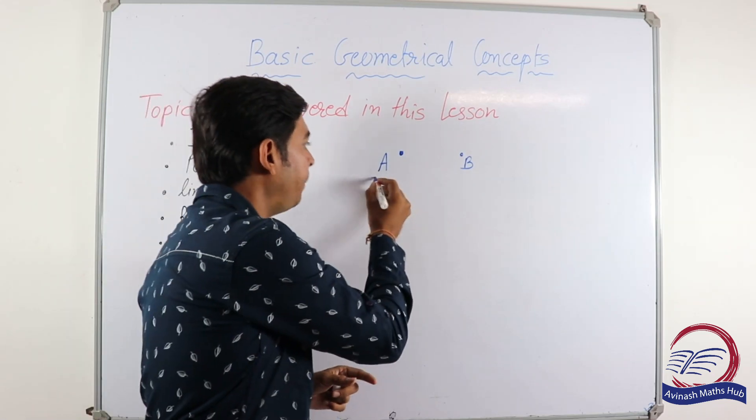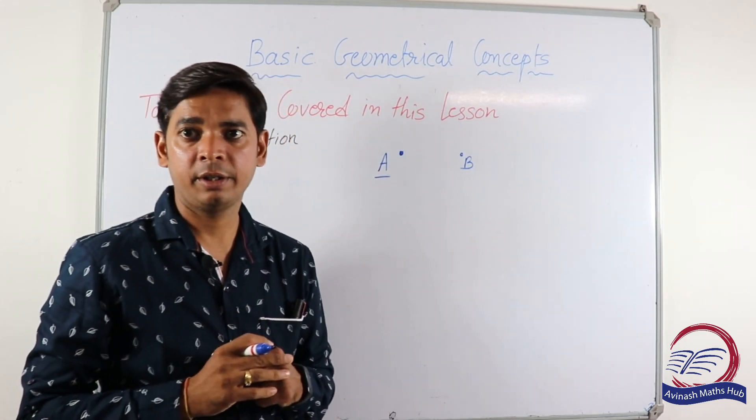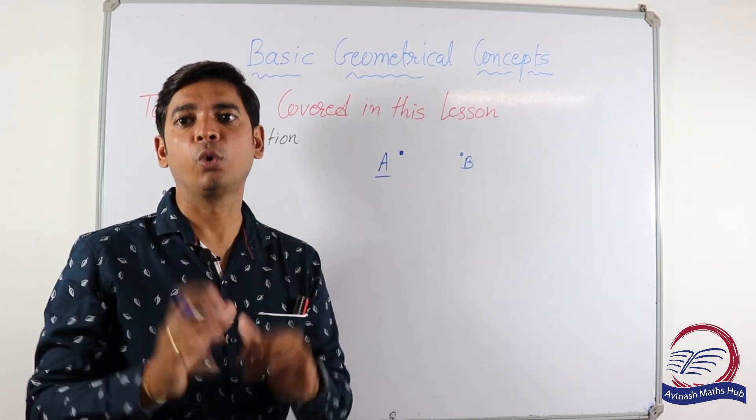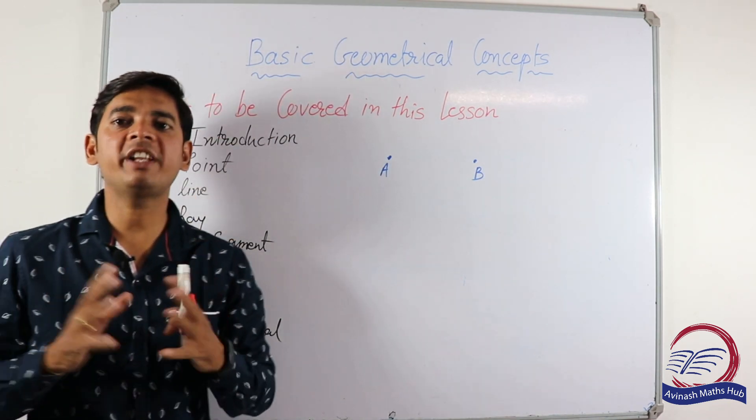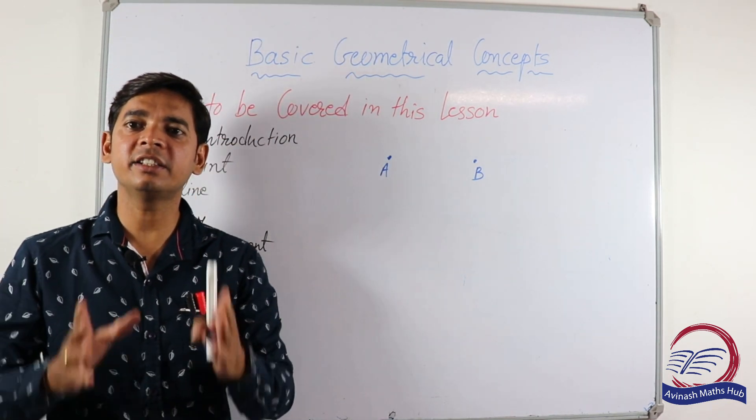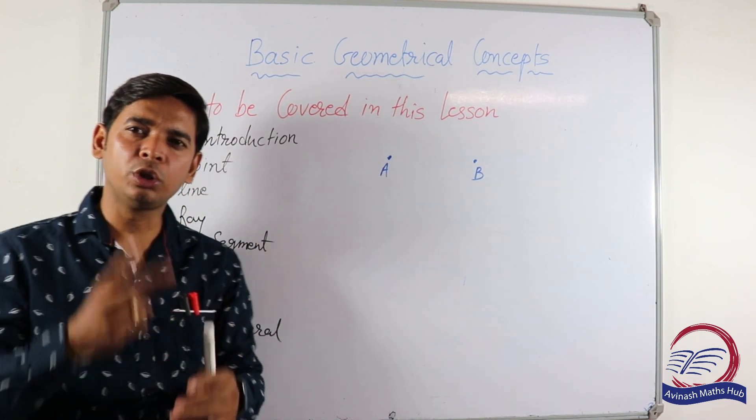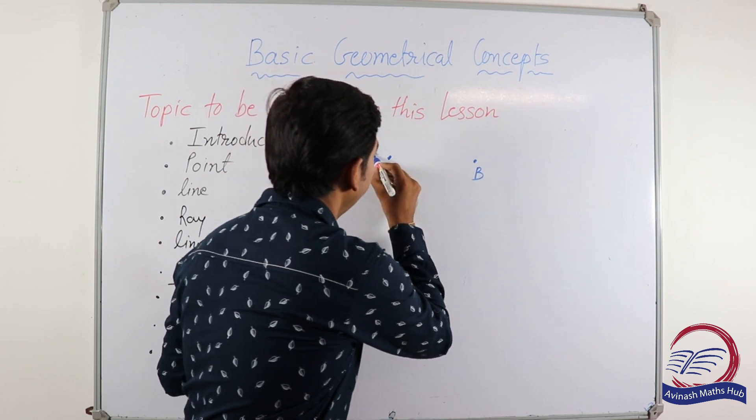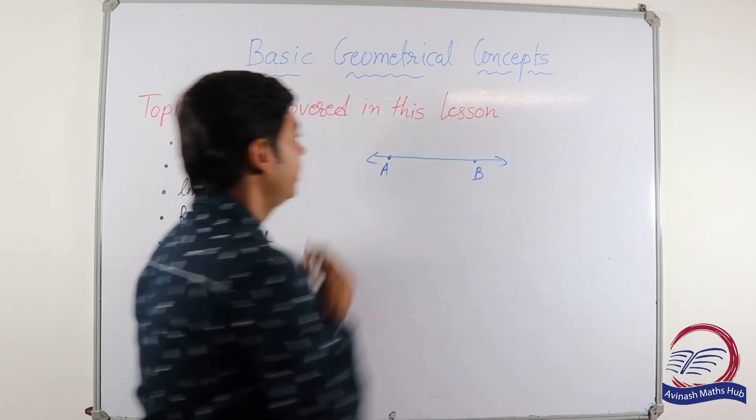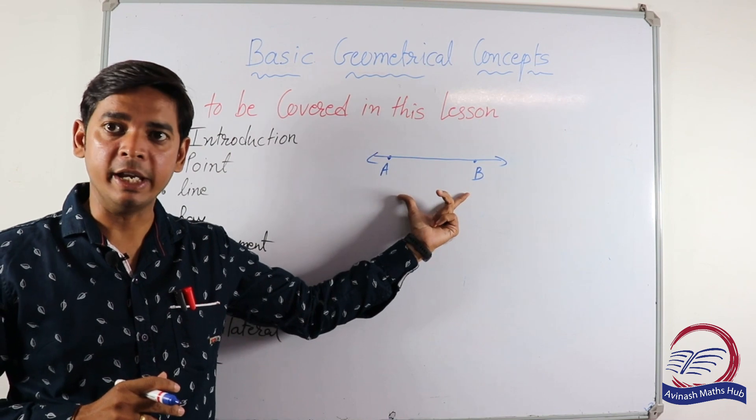Our next topic is line. What is line? A line is a straight path passing through two or more points. Let's check this. A and B are two points. Now this is line AB.